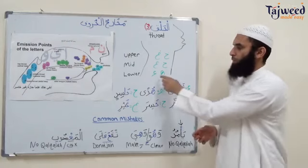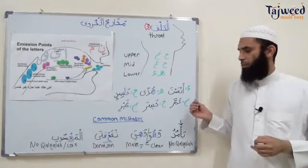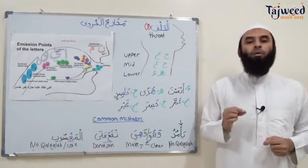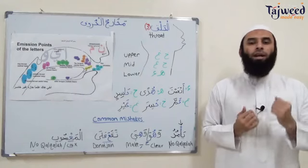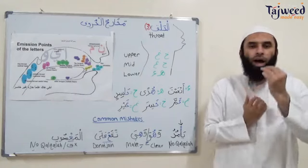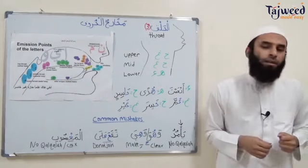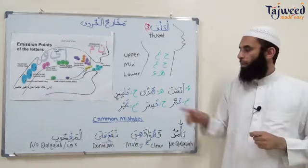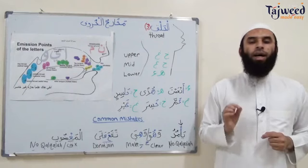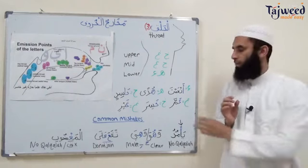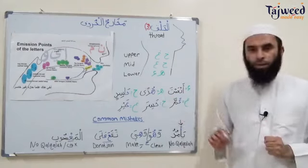Number one: hamza, which is the lower part of the throat. Hamza is equivalent to the 'a' letter in the English language — like apple, a. With the word 'an'amta', we open our mouth: an'amta, an'amta. Then we have ha — huda, huda. He, who, huda. These two letters are very, very simple to understand.